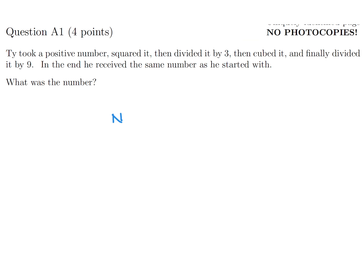We have a number, let's call it n. Square it, then divide by 3, then cube the whole thing, and then finally divide by 9, and that is equal to n, the original number.